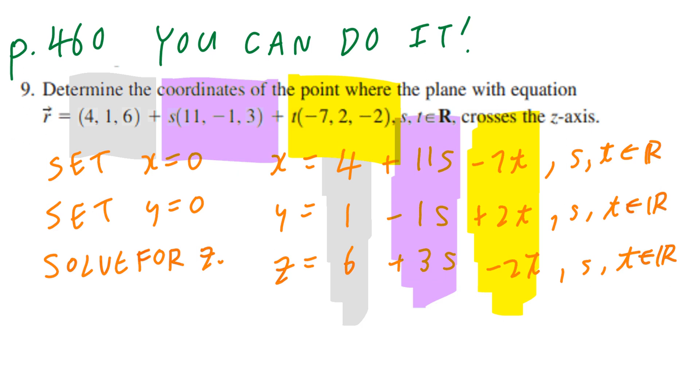Now, the key is this. Since you're going to set x and y to be 0, when you go back, this number becomes 0, this number becomes 0, and my goal is to solve for z. Let me talk about the big picture. I solve for t, I solve for s, and I plug it back into here to find z.